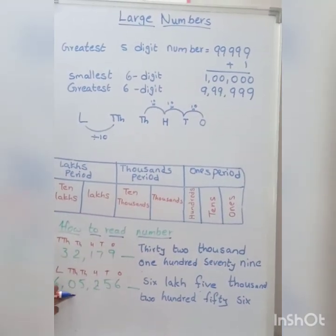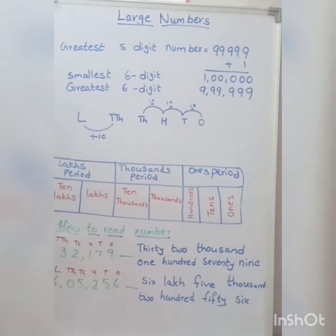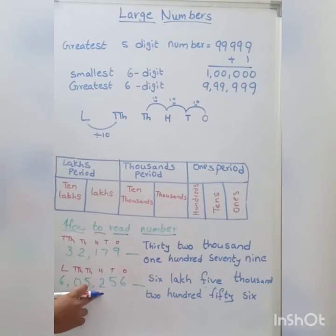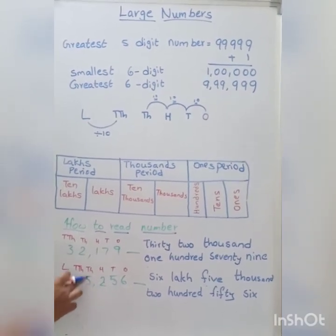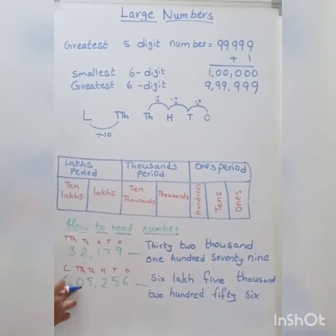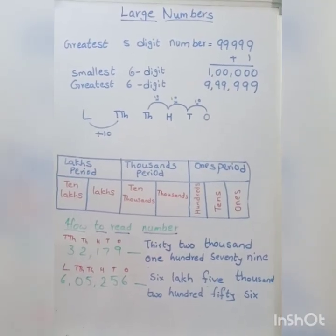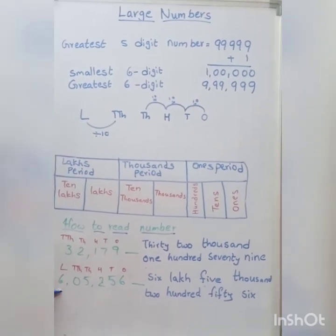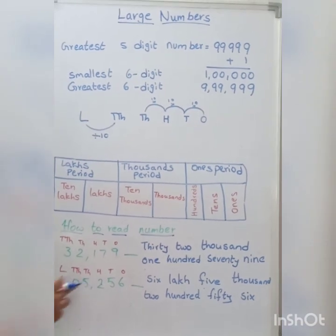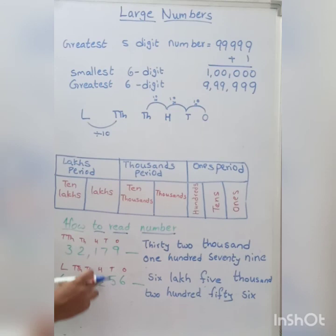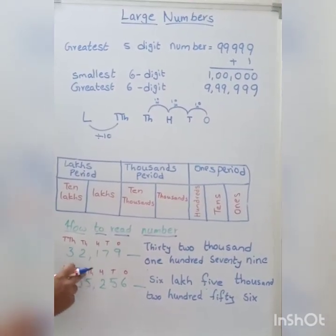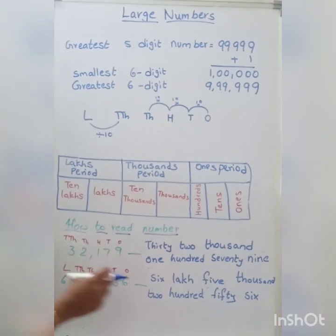The next given number is 6, 0, 5, 2, 5, 6. We assign places: 1s, 10s, 100s — that completes the 1s period, add a comma. Then 1,000s and 10,000s — that completes the 1,000s period, add another comma. The remaining digit 6 is in the lakhs period. In the 1,000s period only one digit is given, which is 5. So the number is 6,05,256.